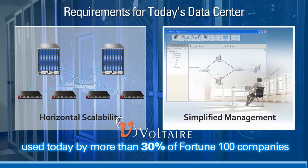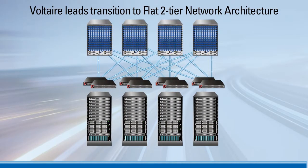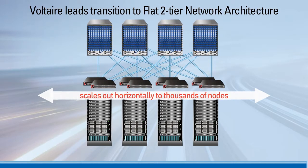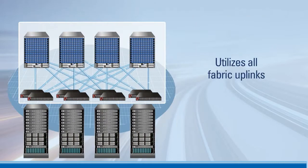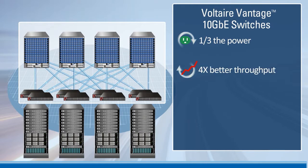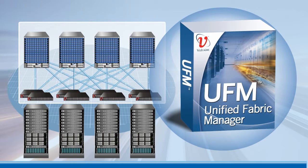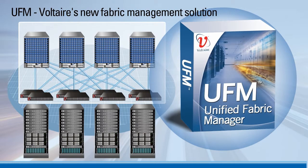This is precisely what Voltaire delivers today to more than 30% of Fortune 100 companies. Voltaire is leading the transition to a flat two-tier network architecture that scales out horizontally to thousands of nodes while concurrently utilizing all fabric uplinks. This architecture uses Voltaire's Vantage switches and consumes one-third of the power of traditional networks while providing four times better throughput and ten times lower latency at half the price.